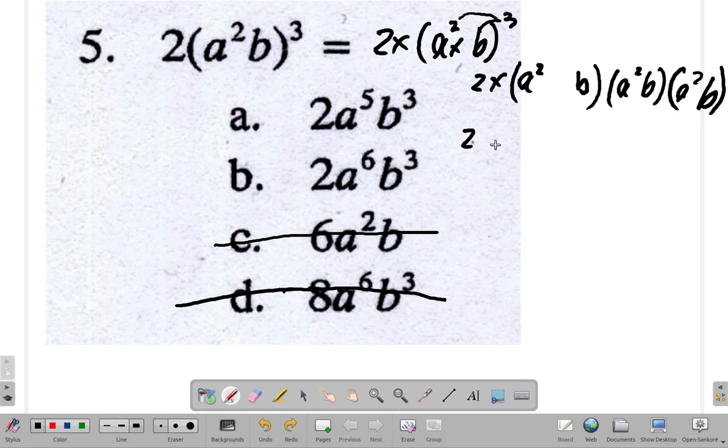And without the brackets, and without the square, it means a by a. This is a by a, this is a by a, this is a by a, and this part is a by a. Then the b's now: b by b by b.